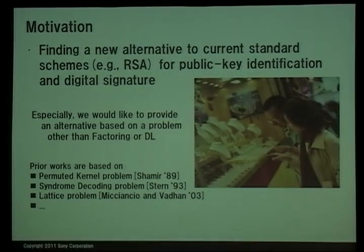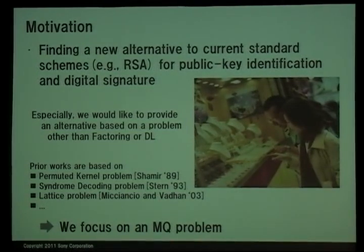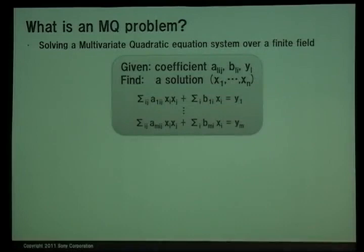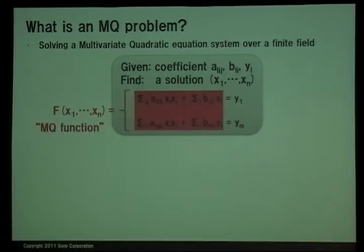There are a number of prior works in this area. For example, identification schemes based on the permuted kernel problem, syndrome decoding problem, and lattice problem. On the other hand, we focus on another problem called the MQ problem. The MQ problem is solving a multivariate quadratic equation system over a finite field. Concretely, given coefficients of the equation system, the problem is finding a solution of the system. This function consisting of multivariate quadratic polynomials is called an MQ function.